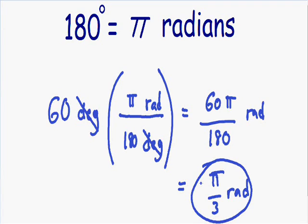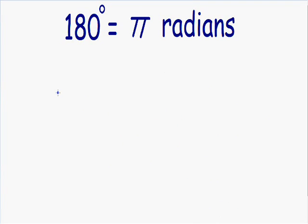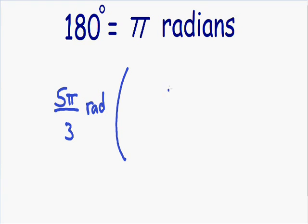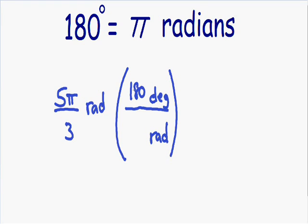Now let's go over an example going from radians to degrees. Let's say that we have an angle of 5 pi over 3 radians, and we need to convert this into degrees. I'm going to make my conversion tool again — a parenthesis with a fraction. In the denominator, you always have to have the same units you're starting with. Since we're starting with radians, we have radians in the denominator. In the numerator, we have the units we're ending with — degrees. The numerator and denominator have to be exactly equal, and we know that 180 degrees equals pi radians. Now we're ready to convert.